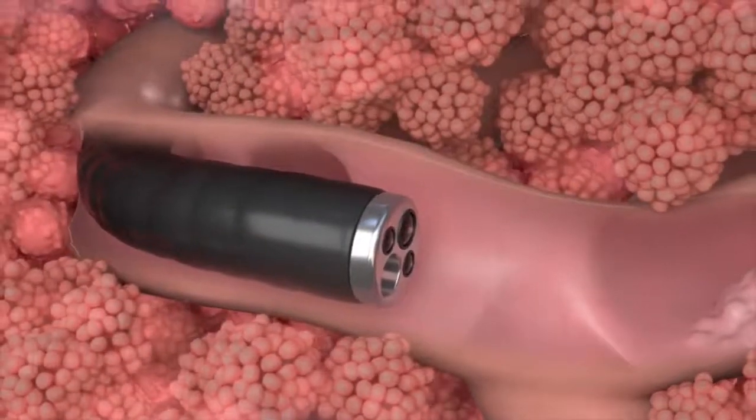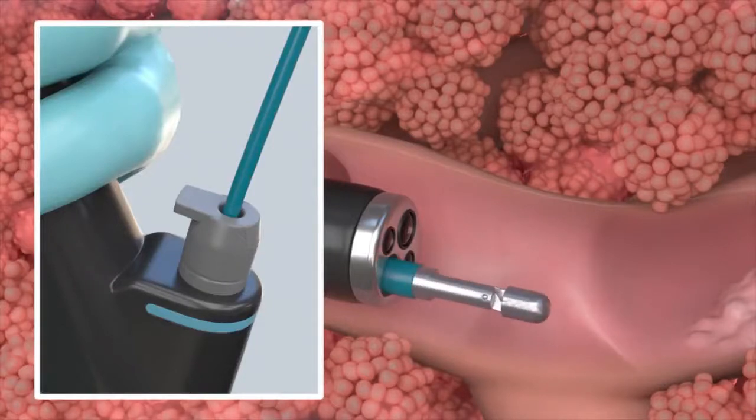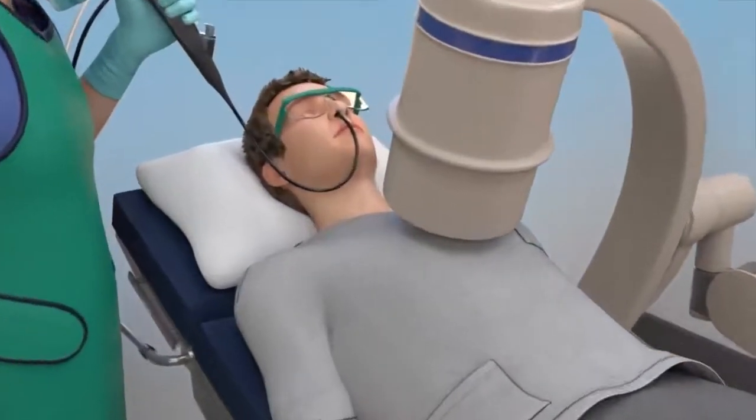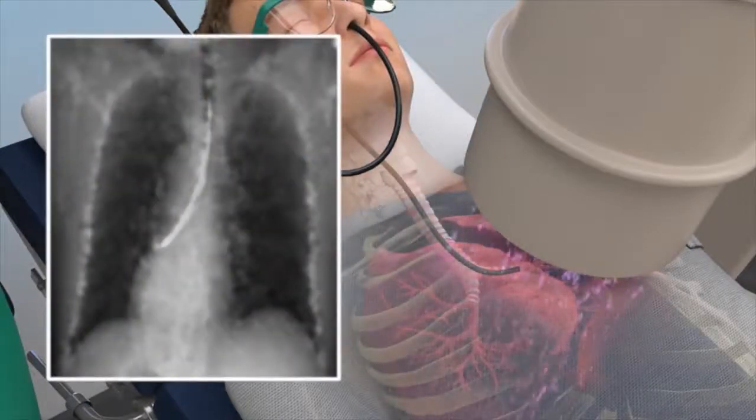Biopsy tools are gently passed through the bronchoscope to reach and view abnormalities. A live x-ray called a fluoroscope is used to watch the biopsy tools reach the lungs' air sacs.